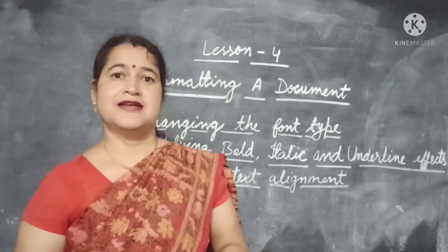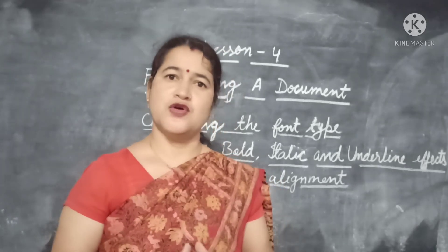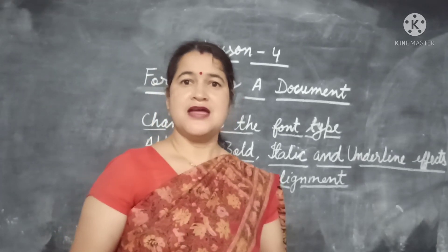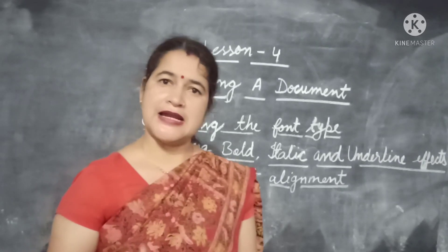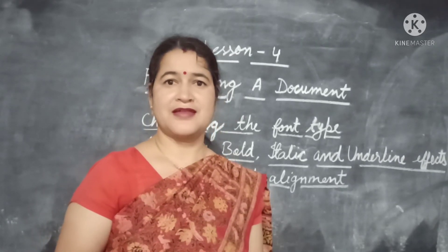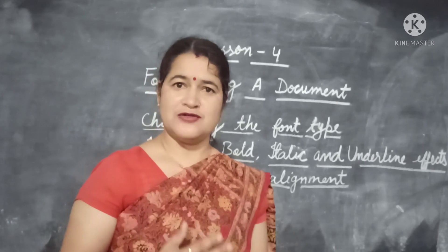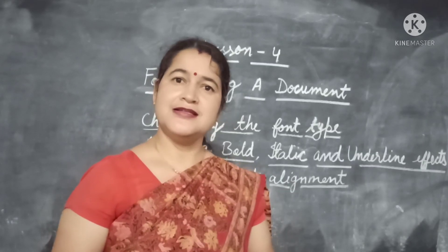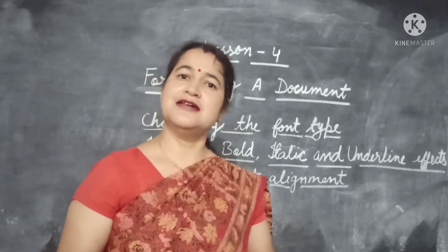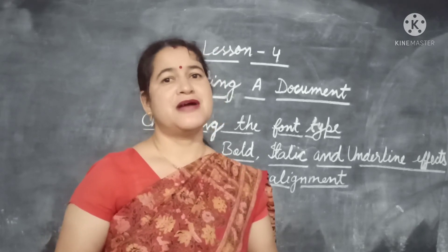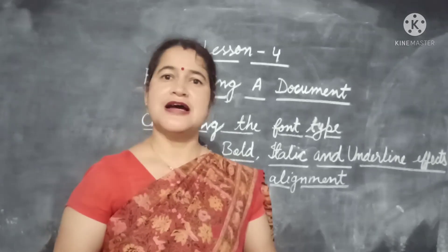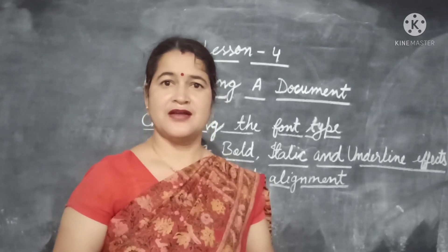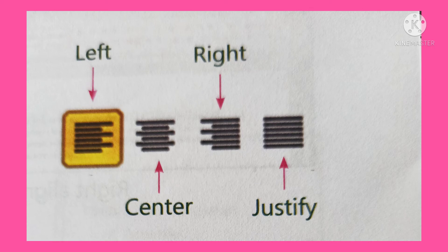Alignment refers to the position of text on a page. It is always better to set the alignment before typing. You can also select an entire document and then change the alignment of the text. Microsoft Word provides four types of alignments: align text left, center align, align text right, and justify align.